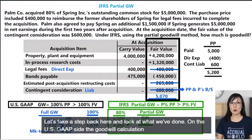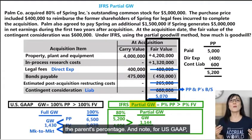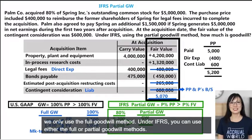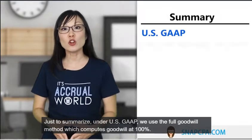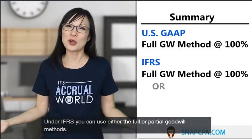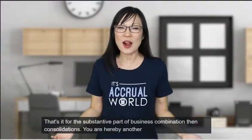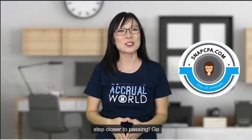Let's take a step back and look at what we've done. On the US GAAP side the goodwill calculation is based on 100%, whereas for the partial goodwill method we compute goodwill based on the parent's percentage. Under US GAAP we only use the full goodwill method. Under IFRS you can use either the full or partial goodwill methods. The partial goodwill method is calculated based on the parent's percentage. That's it for the substantive part of business combinations and consolidations — you are hereby one step closer to passing!